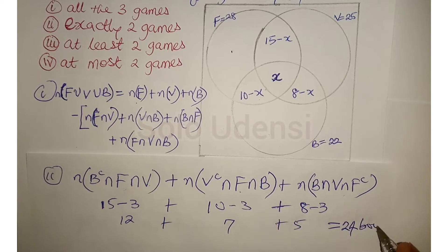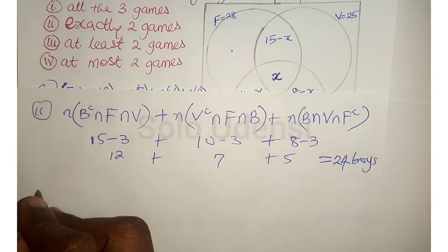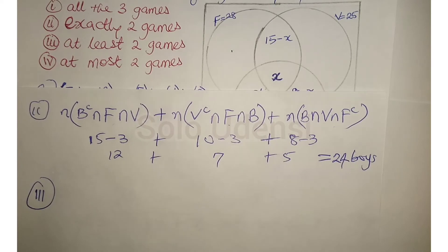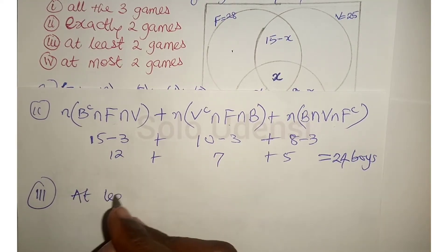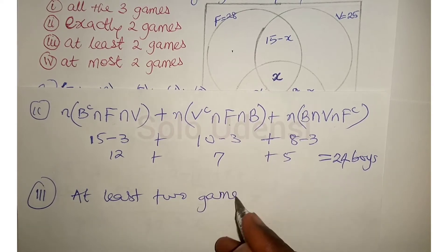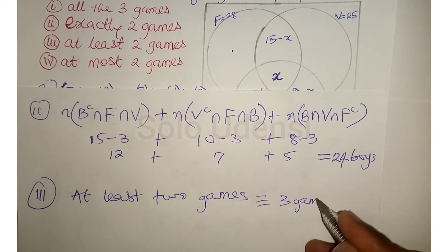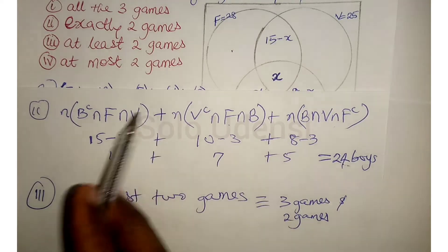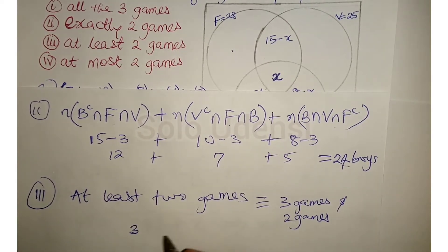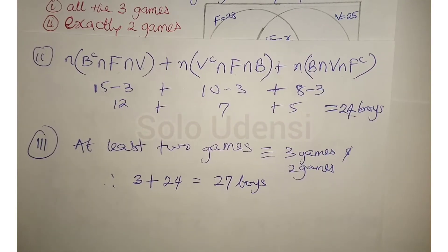The next part is at least two games. At least two games means two games or three games. We found two games to be 24 and three games to be 3. So three games plus two games gives us 3 + 24 = 27 boys play at least two games.